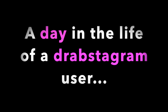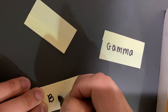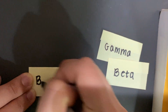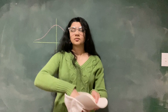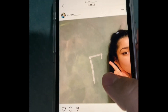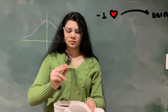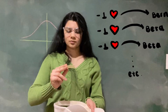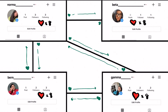Assume that every day, Drabstagram users must give away all of their hearts in the following way. They write the names of all their Drabstagram friends on identical slips of paper and put them in a hat. They then choose a name at random and give one of their hearts to the user chosen. This process is repeated until the user has given away all of their hearts. Once every user has completed this process, their heart totals are re-updated to the new amounts.